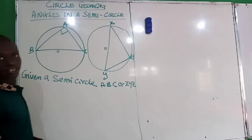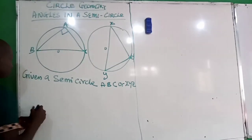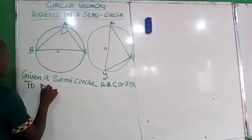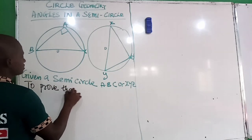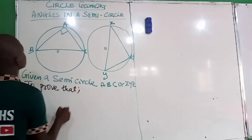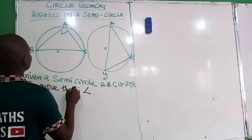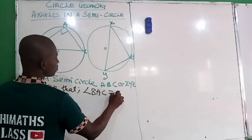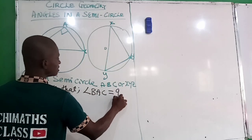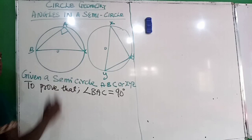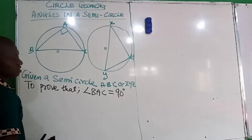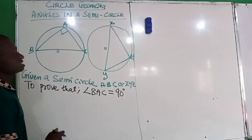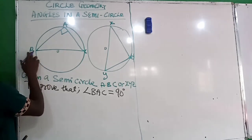To prove this, we have to prove that angle BAC is equal to 90 degrees, with reference to this. We want to show that angle BAC is equal to 90 degrees.